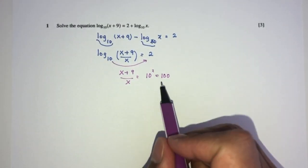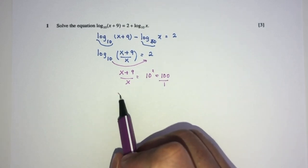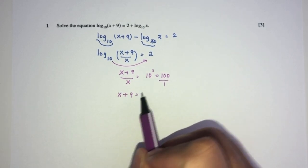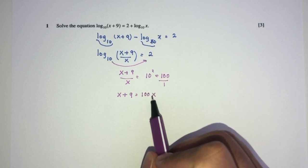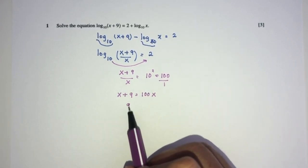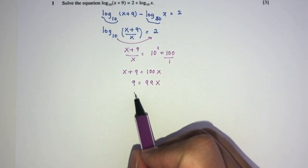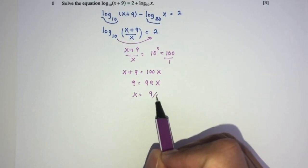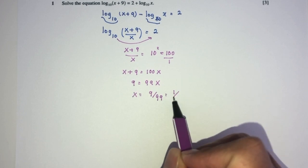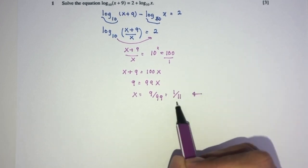Now we can just cross multiply. You will have x plus 9 equals the value of 100x. Send this over here. You will have 9 here and 99x. So finally x will be the value of 9 divided by 99, which is 1 over 11. And this is your answer for question number one.